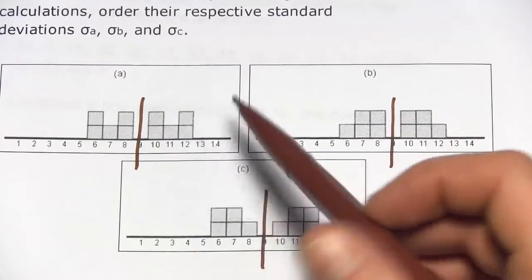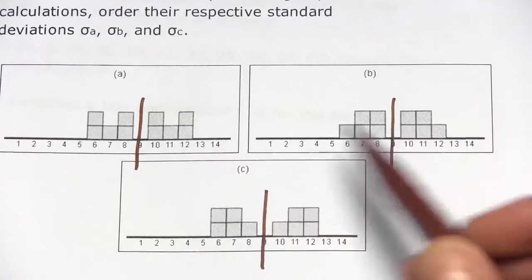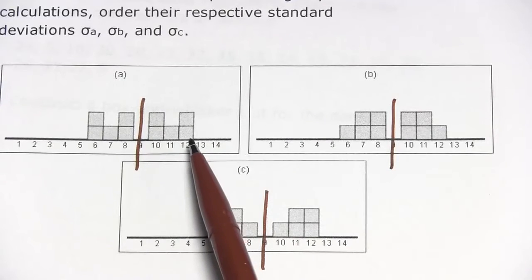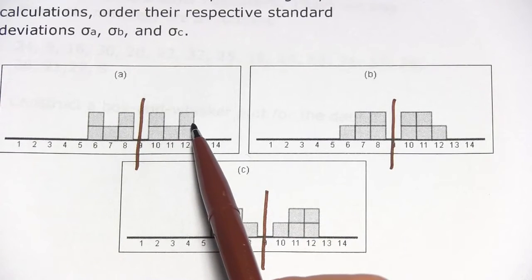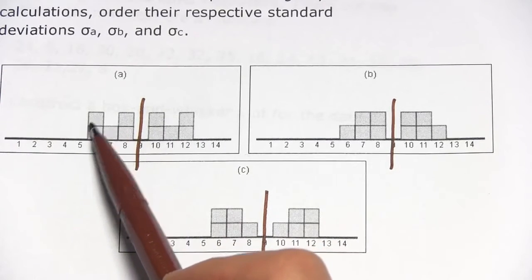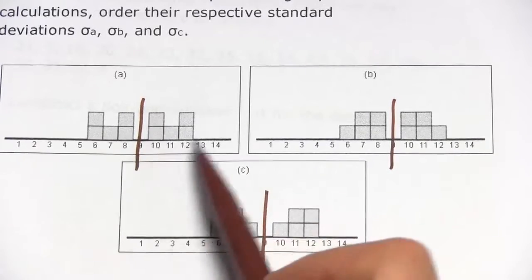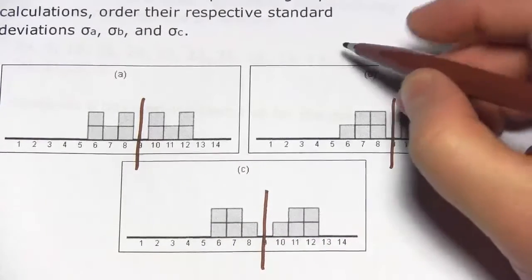If you compare B to A, well A is almost the same except they take the number that was on 11 and push it out to 12, the number that was on 7 push it out to 6, so it's more spread out.